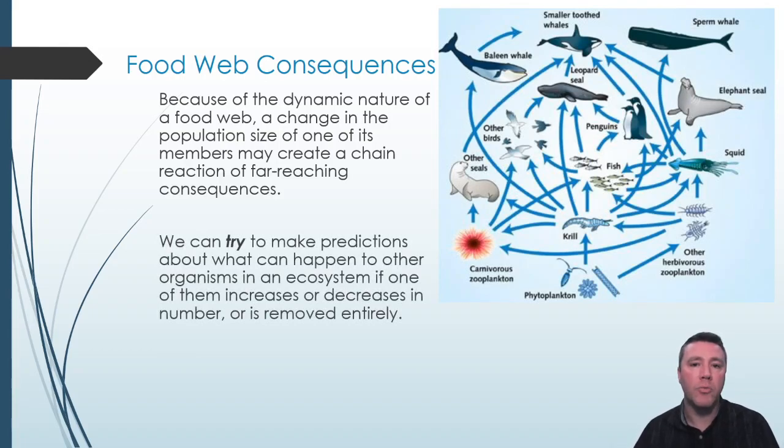If the squid population was to decrease, perhaps due to fishing or disease, fewer krill might be consumed, therefore increasing their population. Then again, that means more food for the other seals. So their population goes up, eating more krill, driving their numbers down.